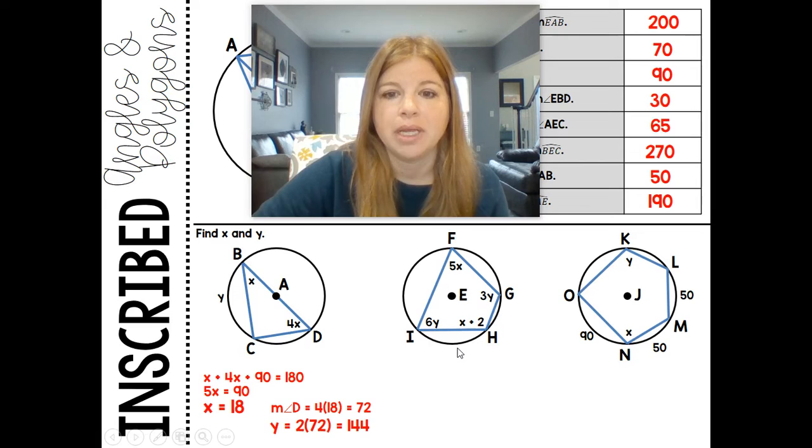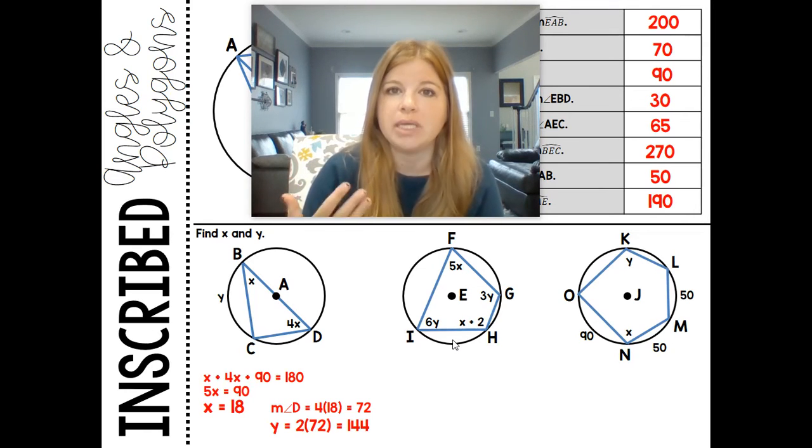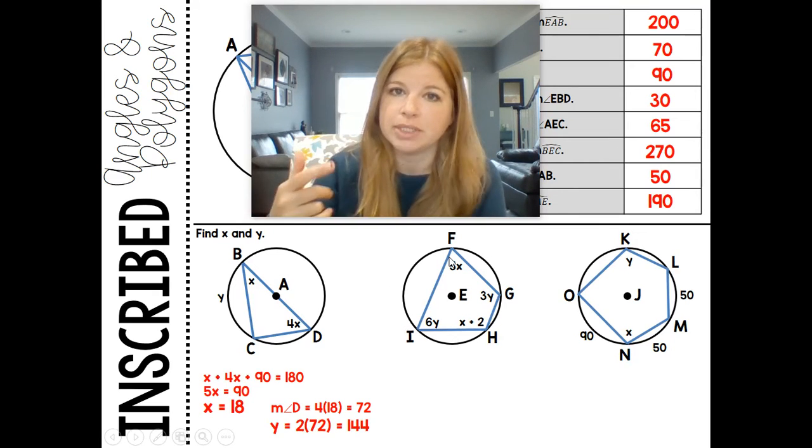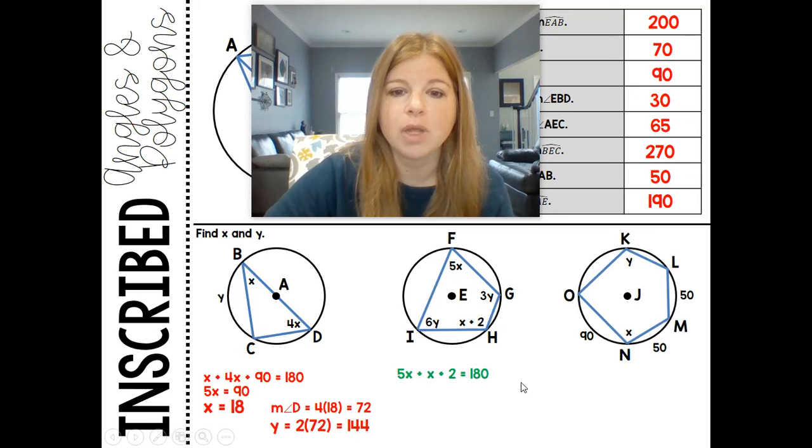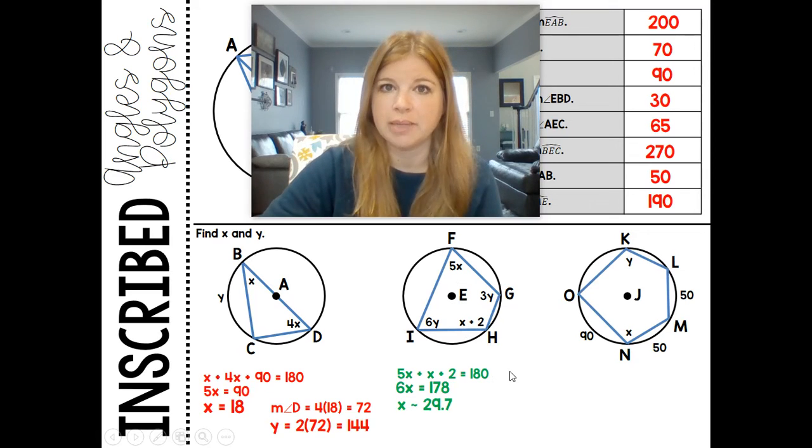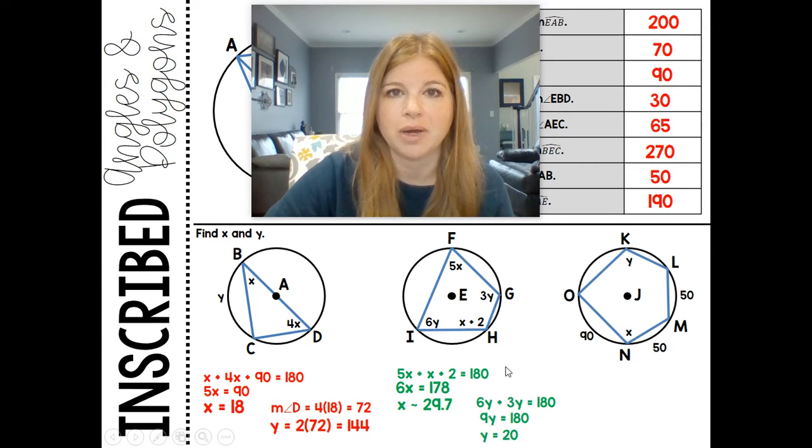There's a special rule with inscribed quadrilaterals: opposite angles add up to 180 degrees. All angles add up to 360, but opposite angles add to 180. So 5X plus X plus 2 equals 180. You can solve for X, which is about 29.7. Same thing for 6Y and 3Y: 6Y plus 3Y equals 180, and Y equals 20.